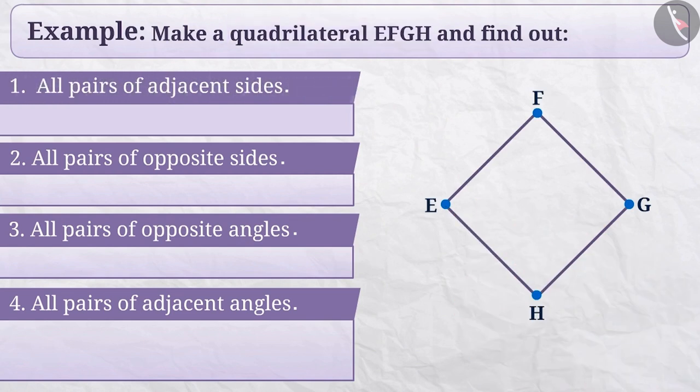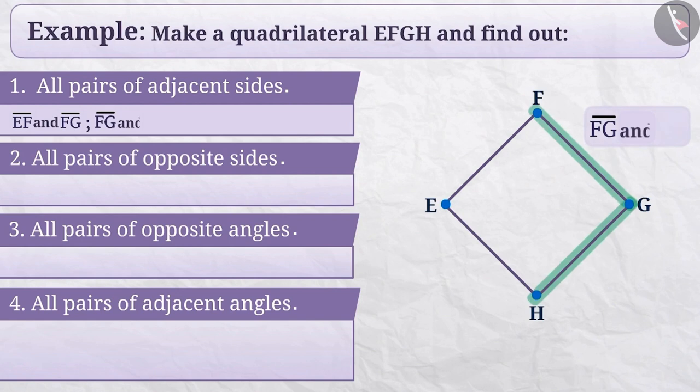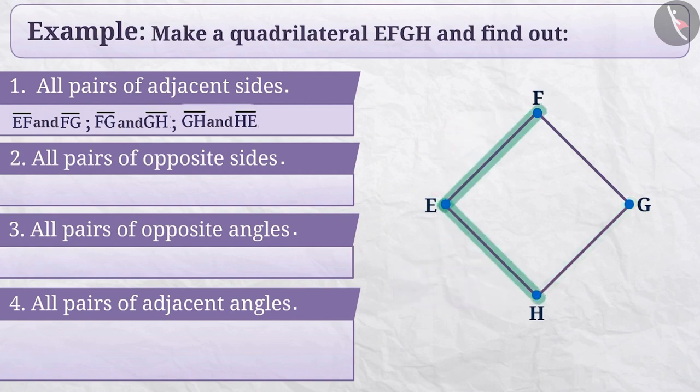Let's find the pairs of adjacent sides. If any 2 sides of the quadrilateral have a common vertex, then such sides are called adjacent sides. Quadrilateral EFGH has adjacent sides: line segments EF and FG, FG and GH, GH and HE, HE and EF.